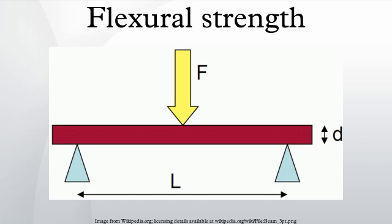The transverse bending test is most frequently employed, in which a specimen having either a circular or rectangular cross-section is bent until fracture or yielding using a three-point flexural test technique. The flexural strength represents the highest stress experienced within the material at its moment of rupture. It is measured in terms of stress, here given the symbol sigma.